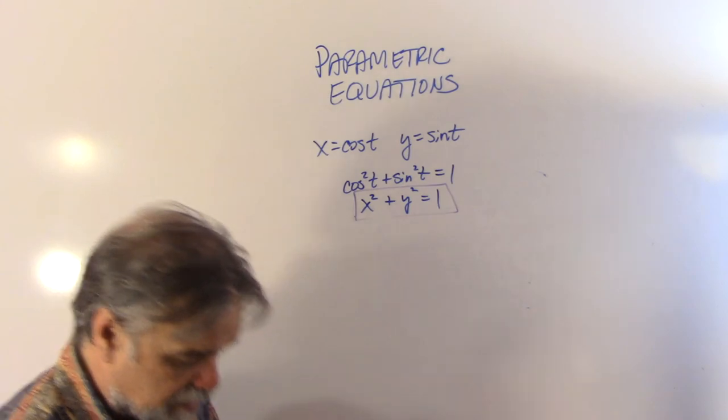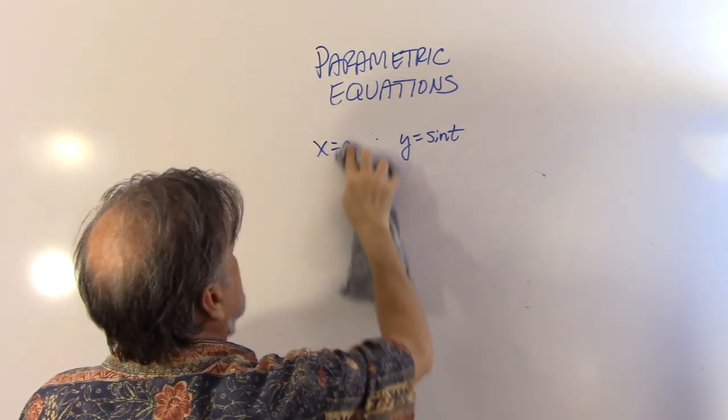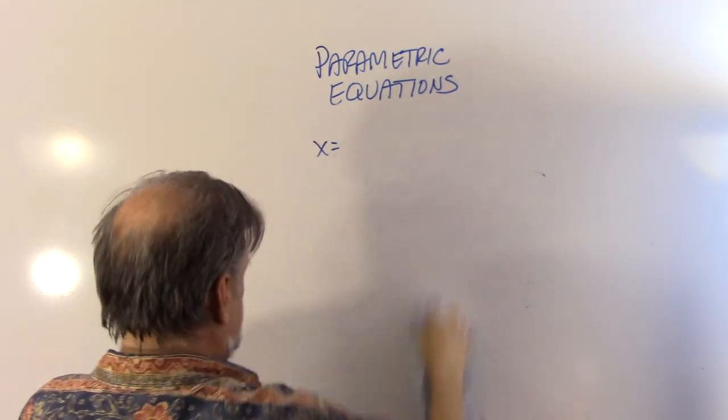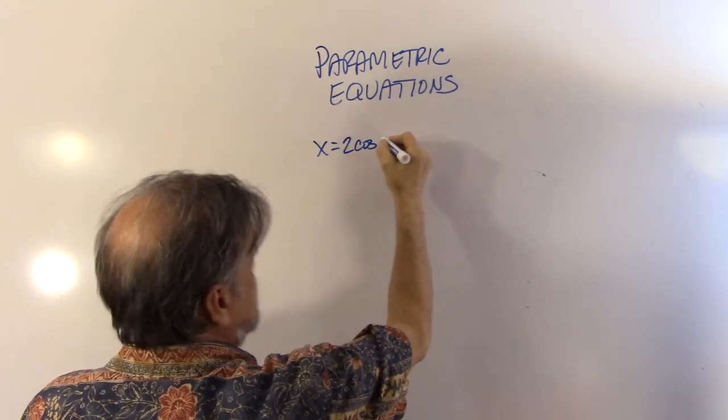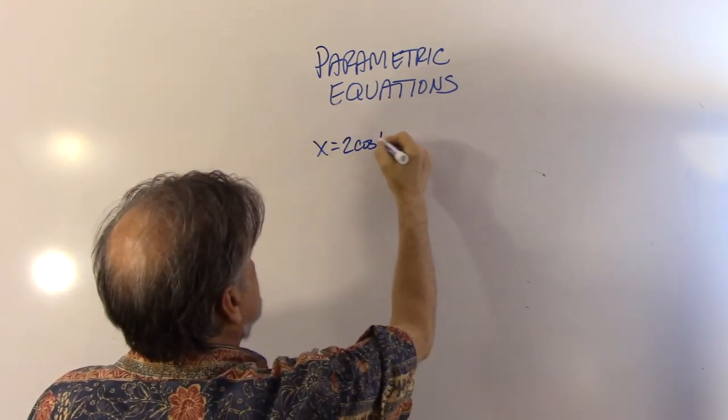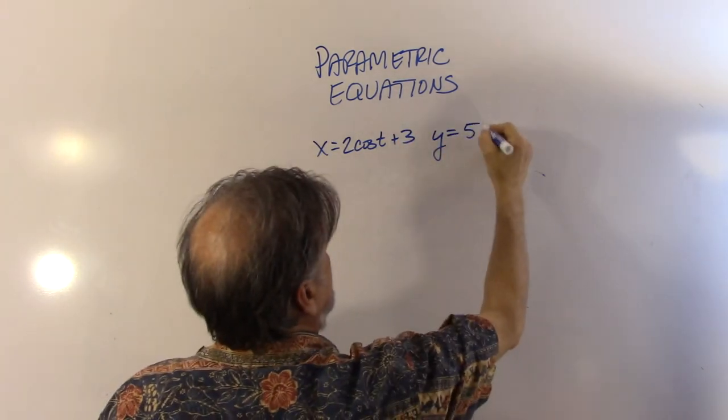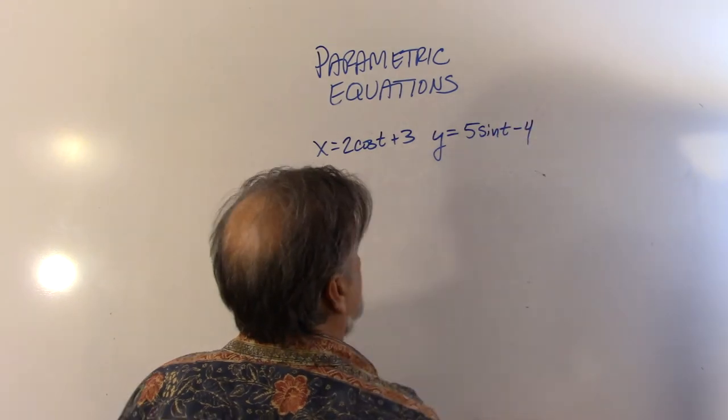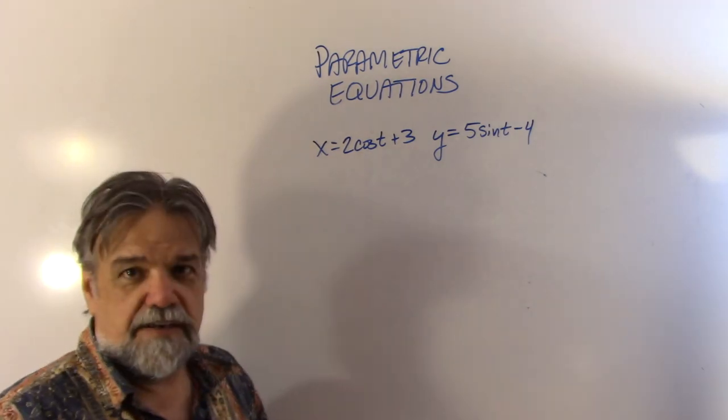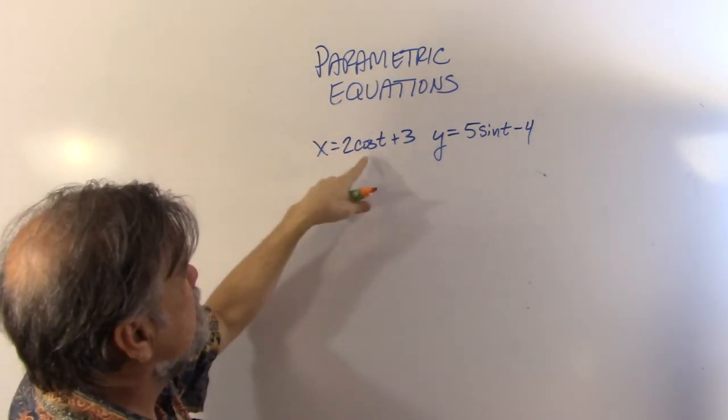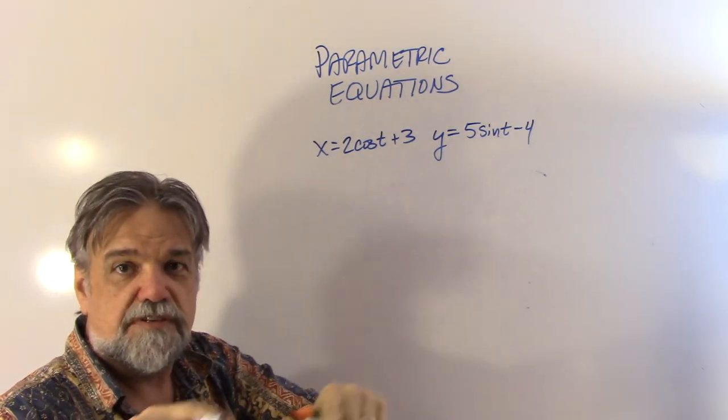So as long as we're doing some trigonometry, let's do some more trig, but let's spice it up a little bit. Let's say that x is 2 times the cosine of t plus 3, and y is going to be 5 times the sine of t minus 4. Yeah, all right. That gives us something to chew on. Again, let's solve this not for t, but for the cosine of t. And we'll solve this for the sine of t. We'll say cosine squared plus sine squared equals 1. We'll see what we get from that.